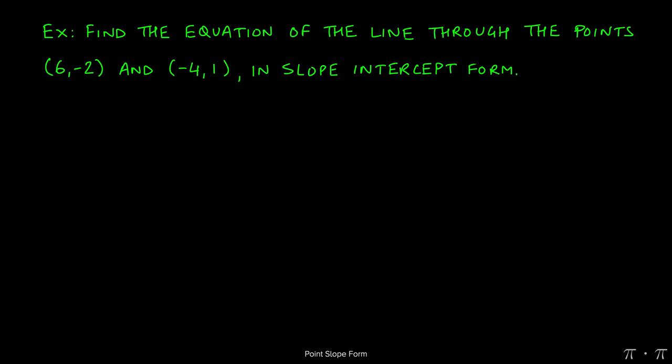Let's say we're asked to find the equation of the line that passes through the two points (6, -2) and (-4, 1), and we're asked to find it in slope-intercept form.